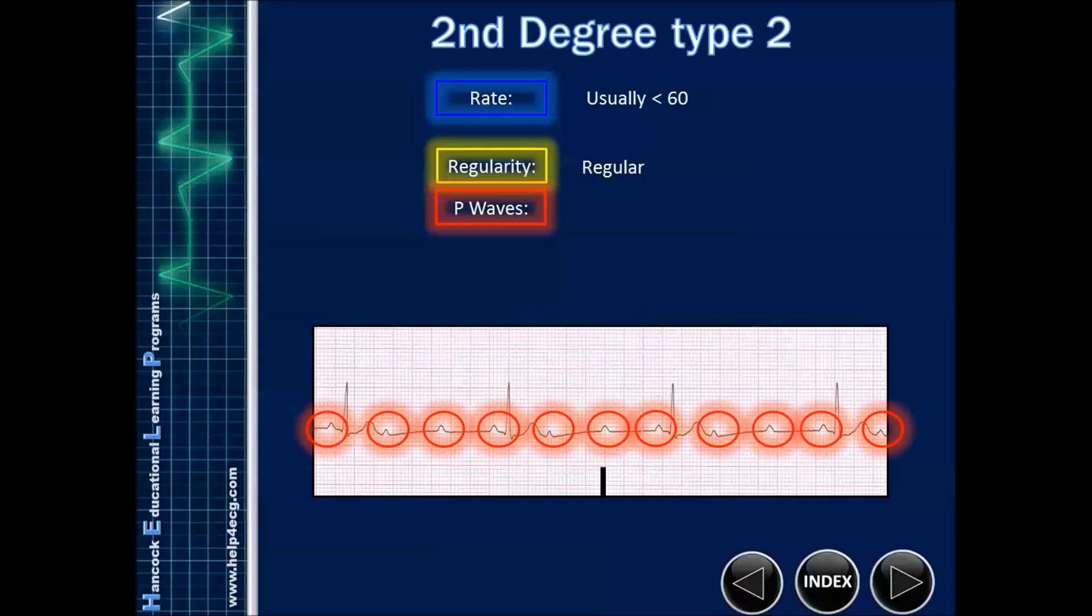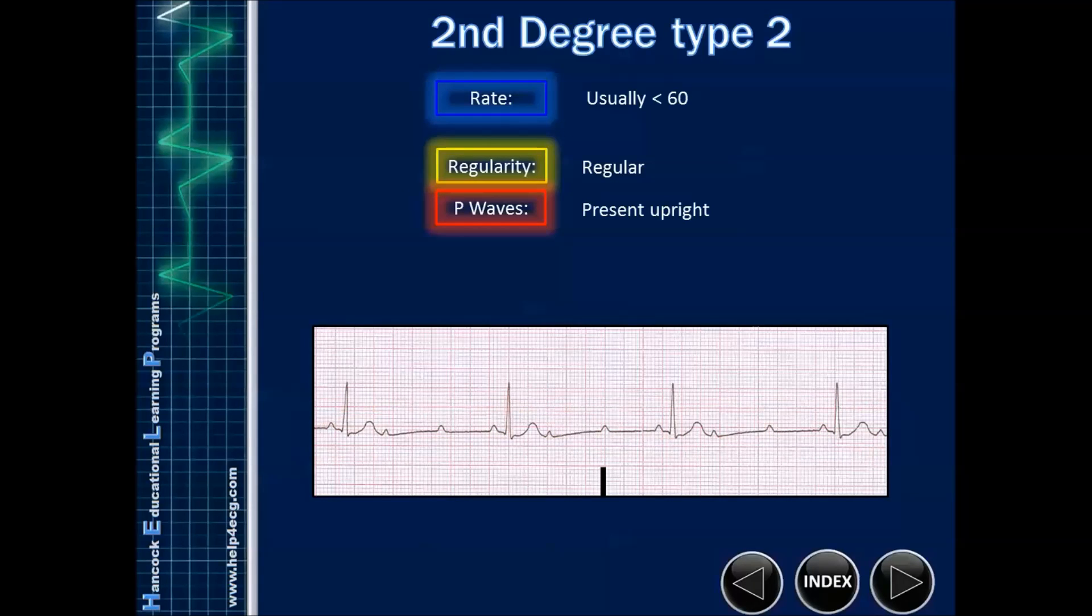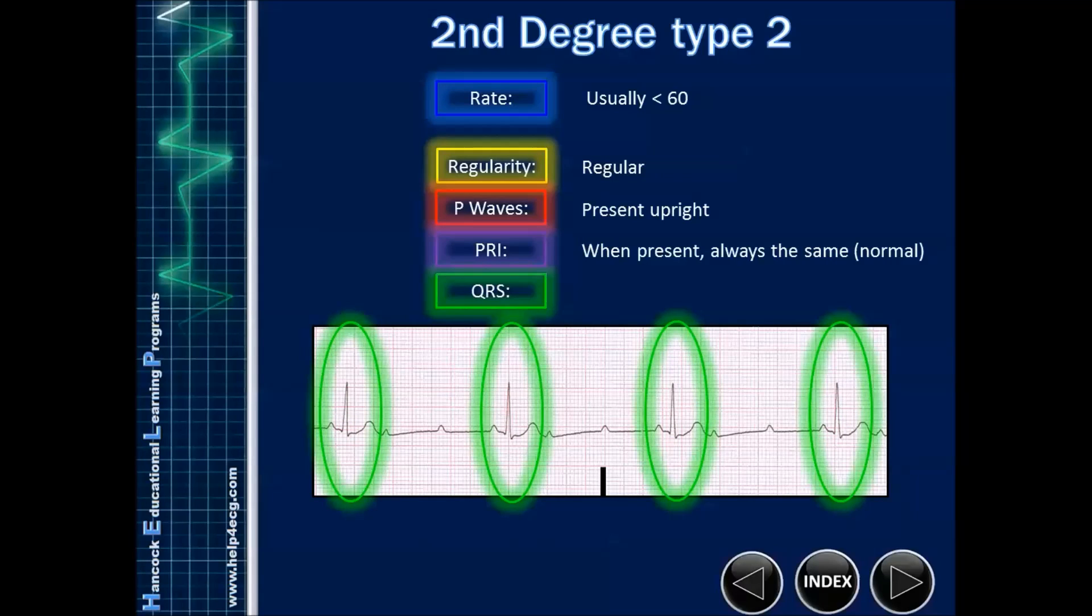P waves are always present. And the PR interval, when it's there, is always exactly the same. So when you have a narrow complex heart block with the PR intervals the same, it's a type 2. Most likely, if the PR intervals are getting bigger, bigger, bigger, that's where we're looking for more of a type 1. That's the differentiation we're looking for. QRS, again, most likely will be narrow unless there's an underlying bundle branch block. And again, it's the wide aberrancy of a third degree heart block that usually keys us off to that.